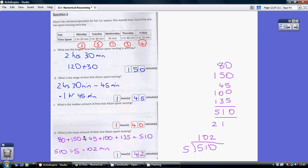Right, part D: what is the mean amount of time that Alison spent revising? Well, remember the mean is the meanest one to work out, it's the hardest one. You've got to add them all up and divide by the number of numbers, so we've got to add up all the time spent.